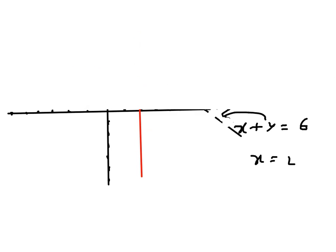So those are the three lines. Now for the region: x is less than or equals to 2, so that's a dotted line. y is less than or equals to 3, so that one is a solid line. x is greater than or equals to 2 means we're on the right side of the red line.